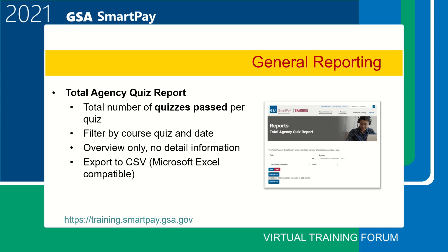The total agency quiz report shows the total number of quizzes successfully passed per quiz for your agency. The initial results are for all quizzes going back to 2011. You can filter on a specific course, quiz, and timeframe. For example, using GSA as my agency, I can run the report to learn that from 2011 to present day, 4,425 people passed the travel account holder AO's quiz. You can even use this report to find out how many people in your agency have the GSA SmartPay program certification.